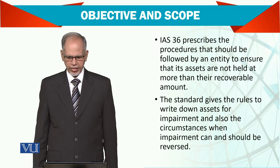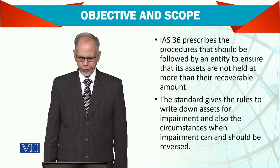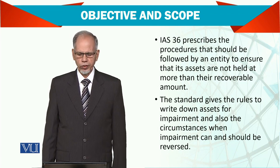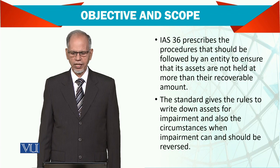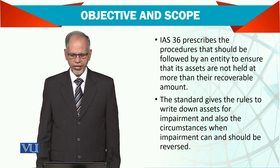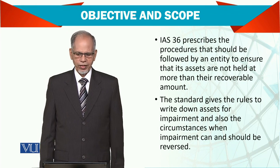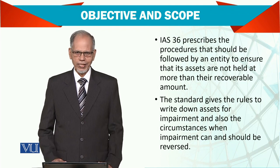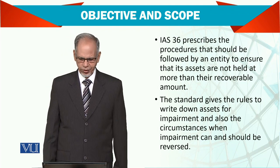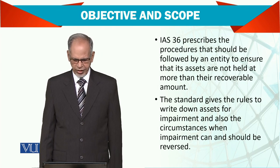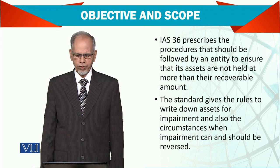IAS 36 prescribes the procedures that should be followed by an entity to ensure that its assets are not held at more than their recoverable value. Remember two key terms here: recoverable value and carrying value. The standard gives the rules for writing down assets for impairment, and also the circumstances when impairment can and should be reversed.